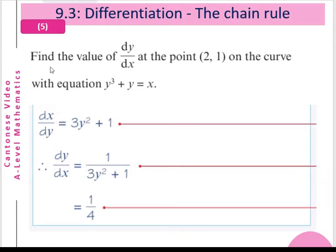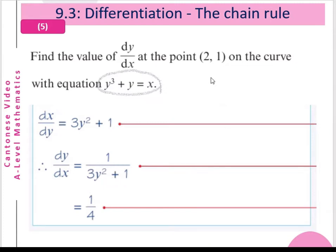Example 5: Find the values of dy/dx at the point (2, 1) on the curve with the equation y³ + y = x. Here x equals some terms of y, so we find dx/dy first. dx/dy equals 3y² + 1, so dy/dx equals 1/(3y² + 1). Substituting y = 1, we get 1/(3 + 1) = 1/4.